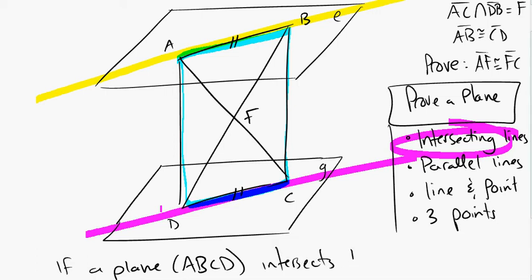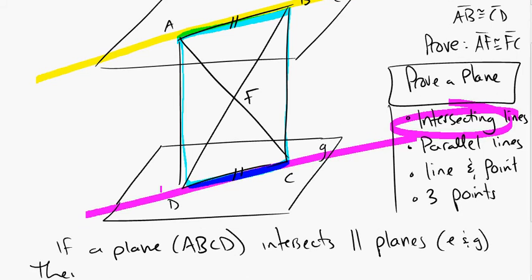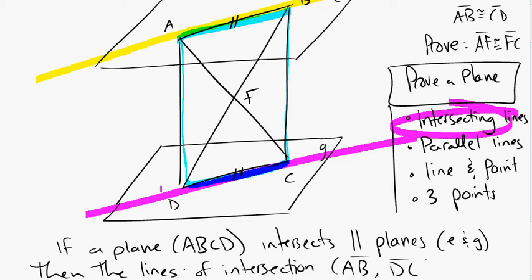And let's actually write it out. If a plane, in this case it was A, B, C, D, intersects parallel planes, in this case E and G, then the lines of intersection, in this case A, B, and D, C, are parallel.